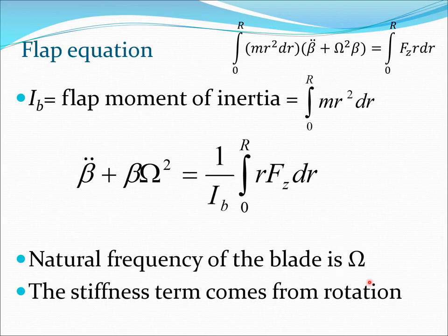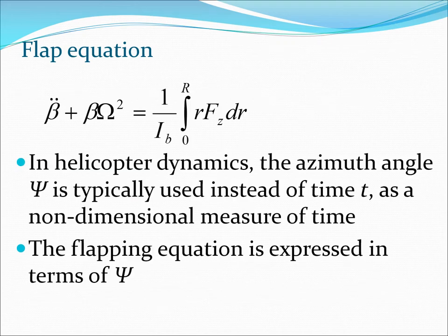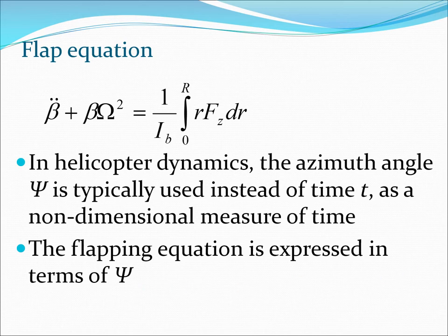Something very interesting comes out of the flapping equation: the stiffness is coming from the rotation of the blade itself. The stiffness term comes from centrifugal force. This equation is typically expressed in terms of time t, but in rotor dynamics psi is used in place of t, so the flapping equation is expressed in terms of psi, which we will do in the next few slides.